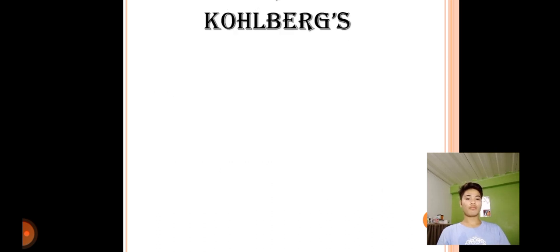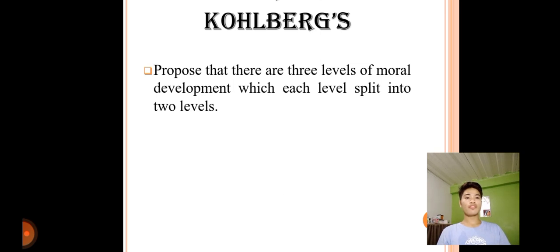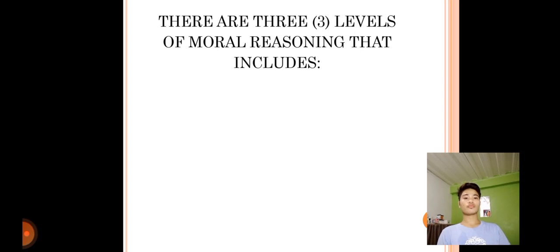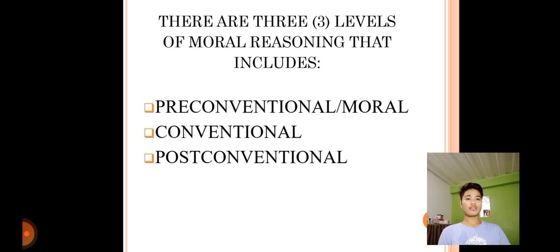Kohlberg's stages of moral development. Kohlberg proposed that there are three levels of moral development, with each level split into two stages. He also suggested that people move through these stages in a fixed order, and that moral understanding is linked to cognitive development. The three levels of moral reasoning are: first, pre-conventional; second, conventional; and third, post-conventional.